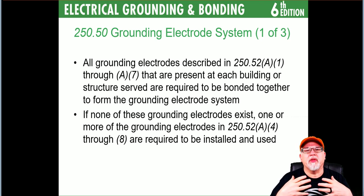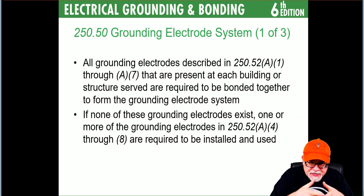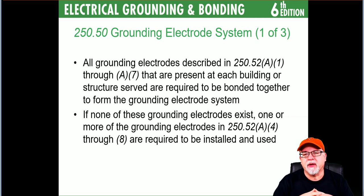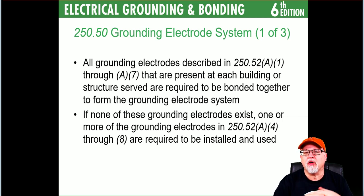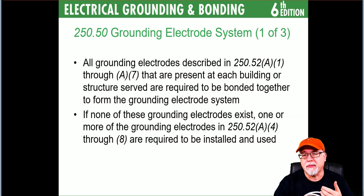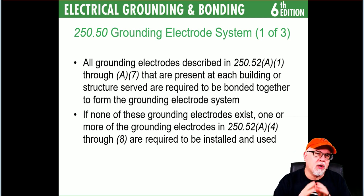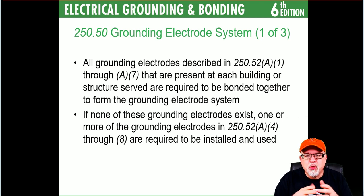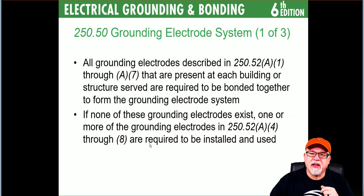The course goes into deep descriptions of grounding electrode systems — not just the electrode but the system itself. Per 250.50, all grounding electrodes described in 250.52(A)(1) through (A)(7) — a list of different types from water pipe ground to other electrode types — all have to be tied together. If none of these electrodes exist, then one or more electrodes from 250.52(A)(4) through (A)(8) are required to be installed.